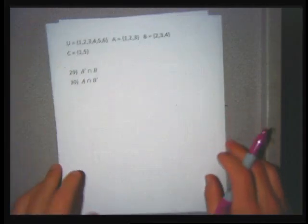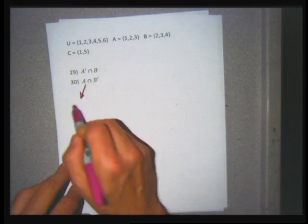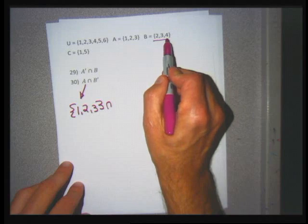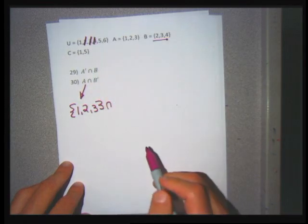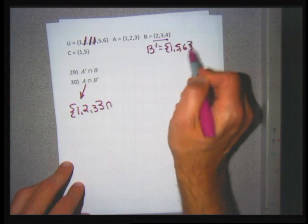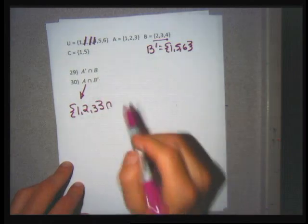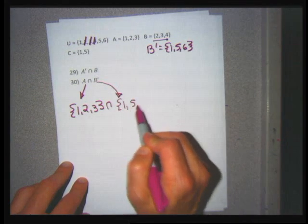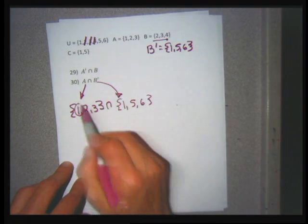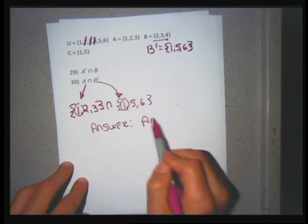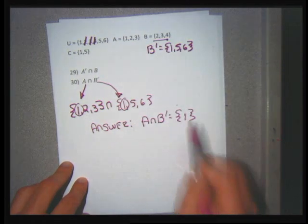Problem 30: A intersection B'. Set A = {1, 2, 3}. B prime: B = {2, 3, 4}, so B' = {1, 5, 6} after removing 2, 3, 4 from the universe. Intersecting A = {1, 2, 3} with B' = {1, 5, 6}: they have 1 in common. So A intersection B' is the set containing just 1.